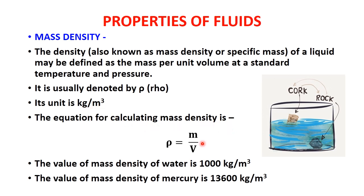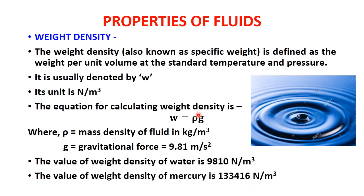The equation for calculating mass density is rho = m / v. Each fluid will have a certain density value. For example, a cork object floats at the surface while a rock sinks — this is because density determines the position of an object in water. The value of mass density of water is 1000 kg/m³ and that of mercury is 13600 kg/m³.